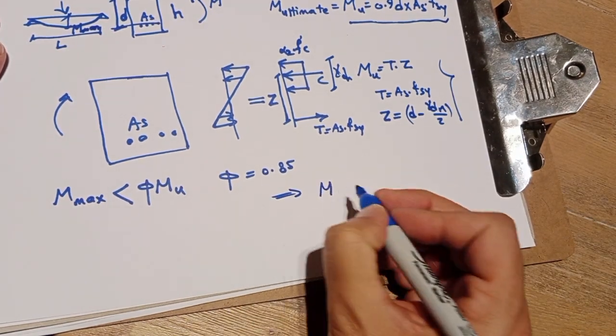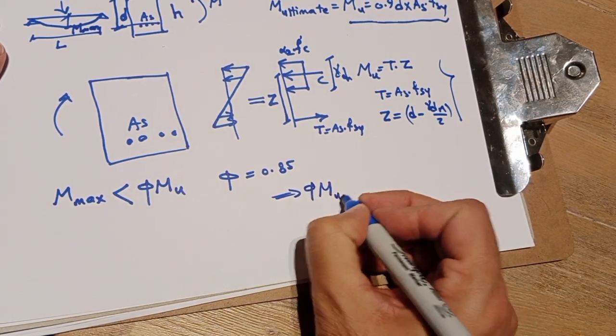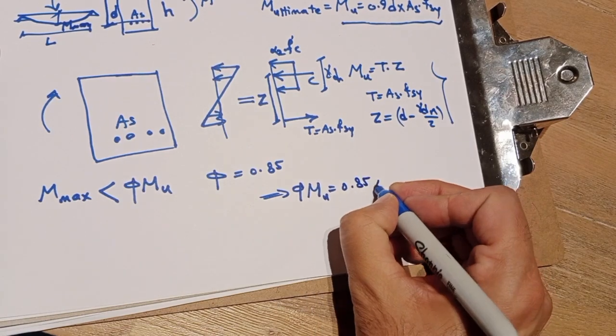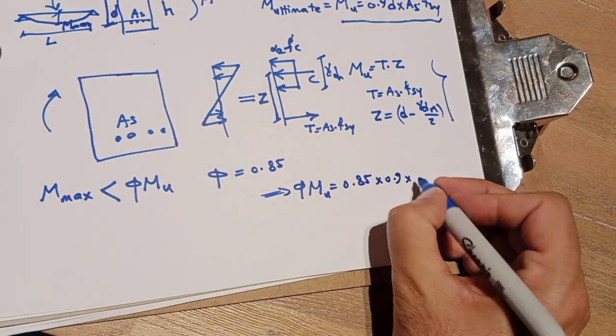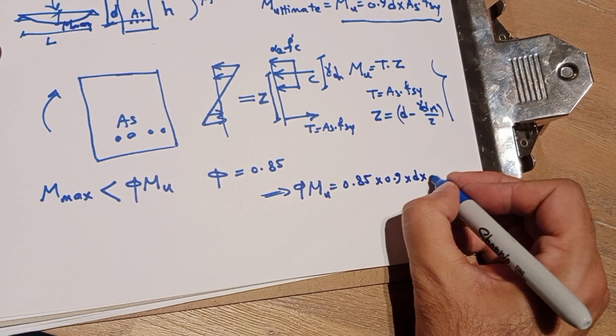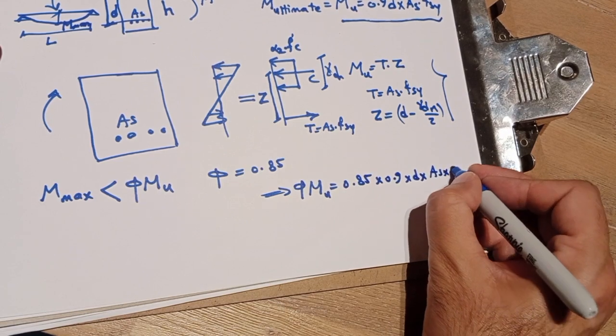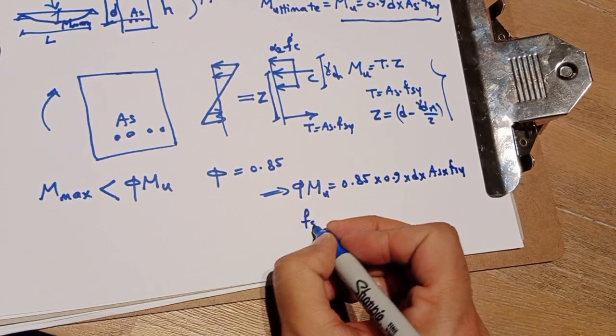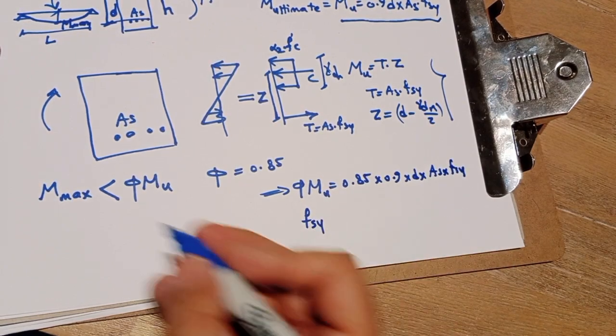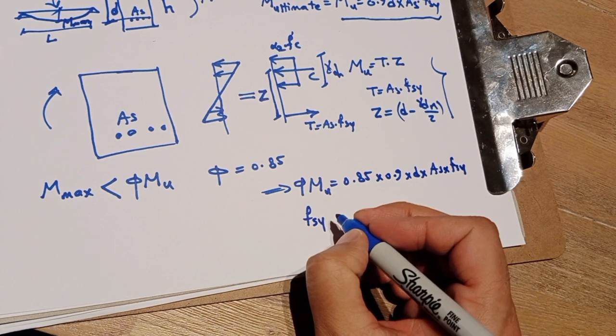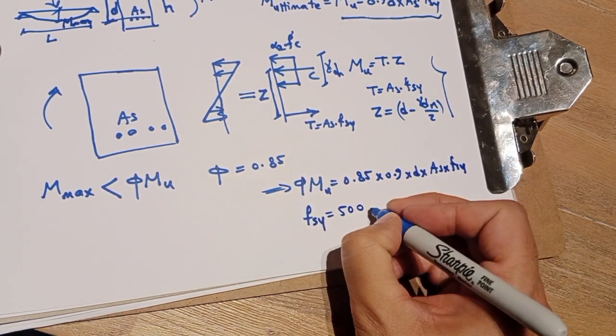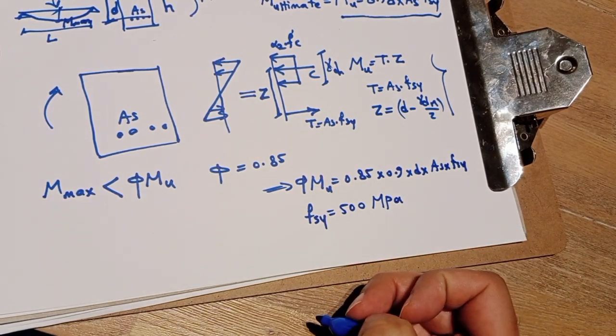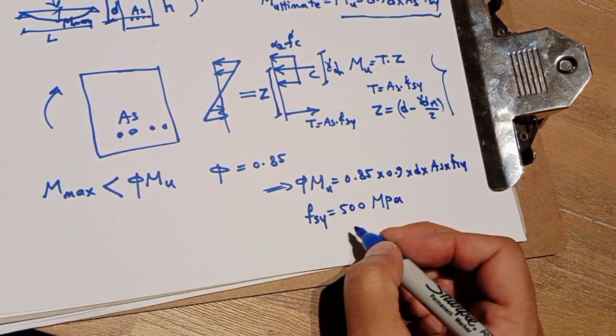The M reduced capacity of the beam will be 0.85 times 0.9 times d times As times fsy. Fsy is the capacity of tension in the bars that is normally about 500 MPa, but it may change for different types of reinforcement.